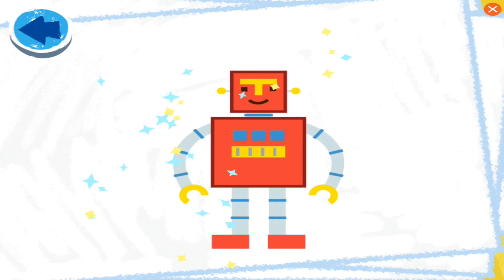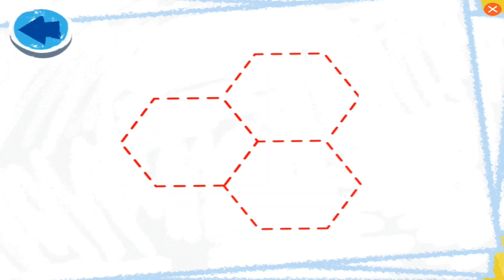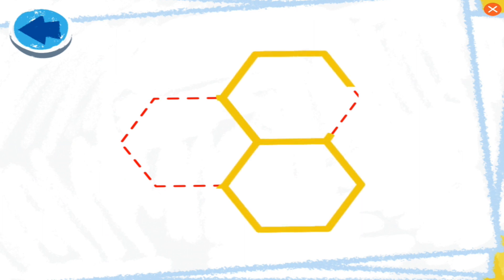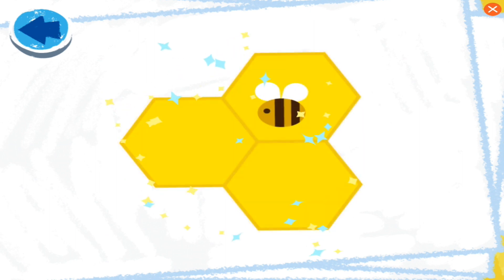This picture has squares! Boy, Elmo wonders what it is! Hello, nice robot tracing! This picture has hexagons! Boy, Elmo wonders what it is! Oh-ho-ho! Elmo sees... It's a honeycomb!